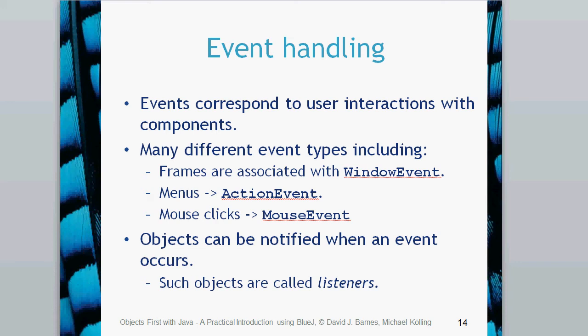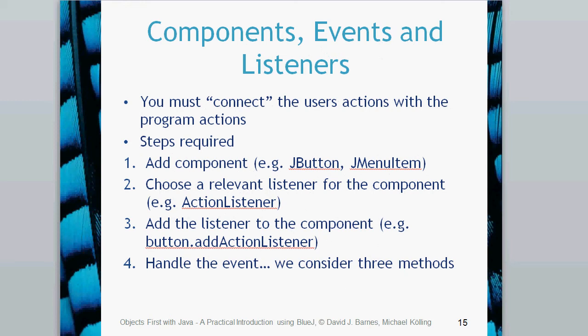Objects can be notified when an event occurs and these are known as listeners. So we need to create these listener objects. We have components, events and listeners, and you need to connect those user actions with specific program actions. To do this, you add your particular button to your JFrame or JApplet or whatever root level container you're using. You then need to choose a relevant listener for the component — in our case, an action listener — and then add that listener to the component.